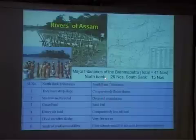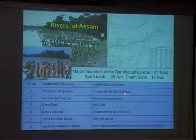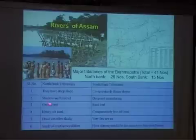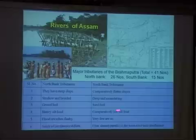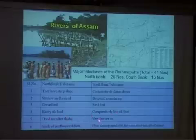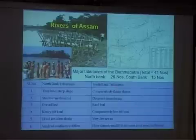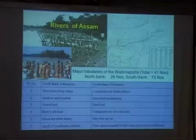On the other hand, the South Bank tributaries are much more stable. Comparatively, they have flatter slopes, they are deeper and they are meandering, which the North Bank tributaries are not. They are mostly sand bed, not as much gravel bed. Comparatively low in silt load, and very few actually have a flashy nature. Also, the flow is almost parallel to the main river near the confluence, which is peculiarly different from the North Bank tributaries.